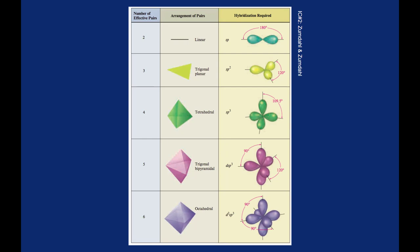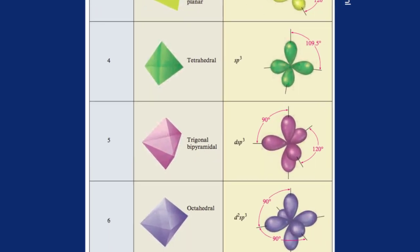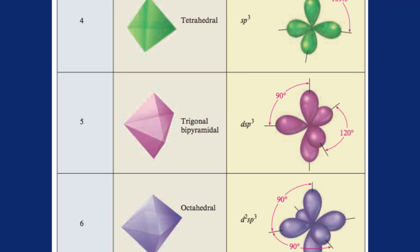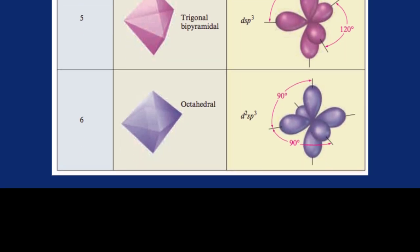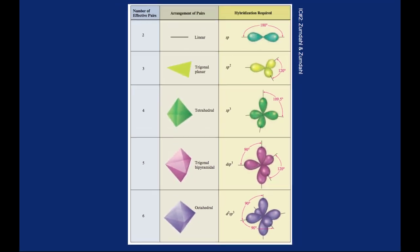You can also see that when you expand the octet, just having s and p orbitals is not enough. You need to start bringing in d orbitals. So for five sites on the central atom in your trigonal bipyramid, you need a single d, a single s, and three p's to make your dsp3 hybridization. And then for your octahedral shape, you need another d orbital. So you're going to have a d2sp3 hybridization to get all six sites around your central atom.